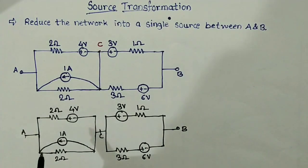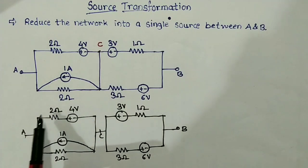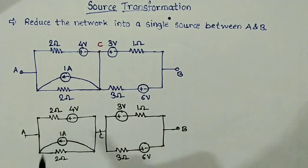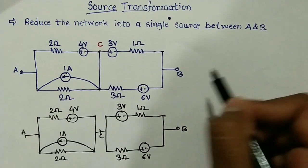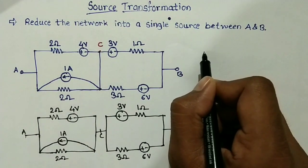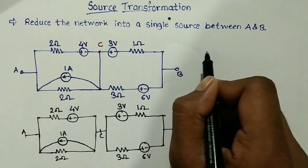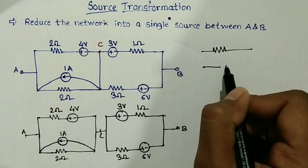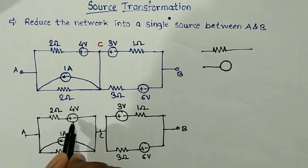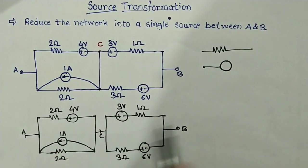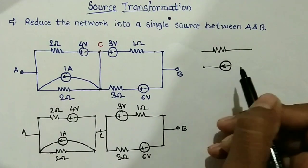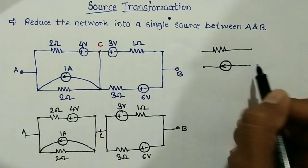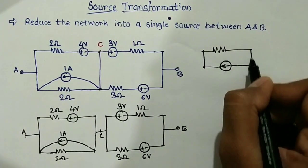In the next step, we will convert each and every voltage source with a series resistance and replace them with a current source and a parallel resistance. So, for this 4 volt and 2 ohm resistance first, we will convert it into a current source and a parallel resistance. The direction of the current source is important — since the positive sign is in this direction, the arrowhead of the current will indicate the flow of current in the positive direction.